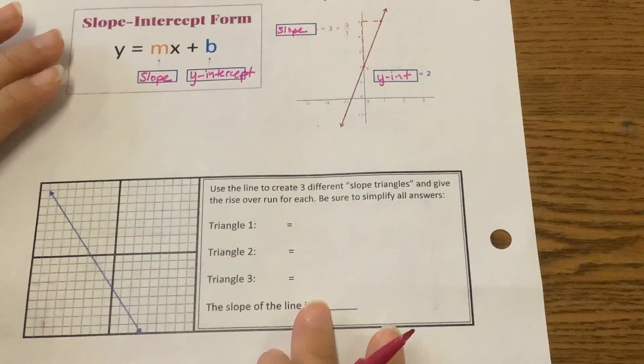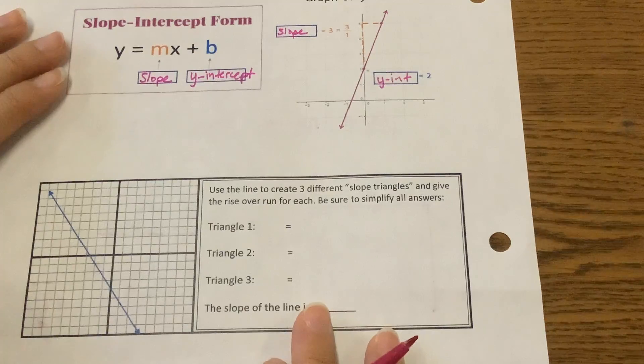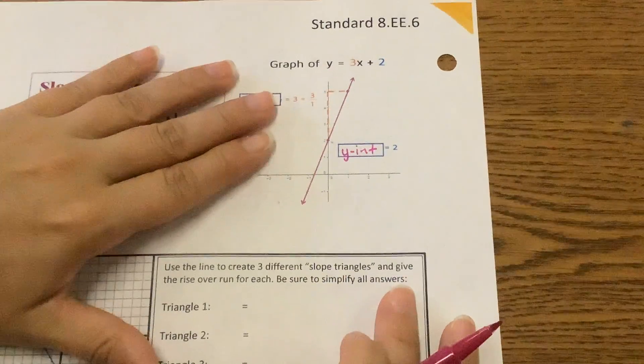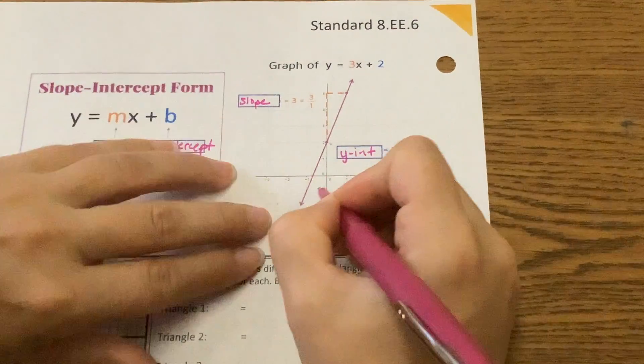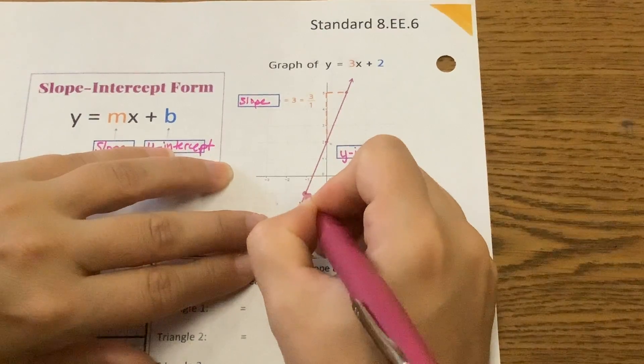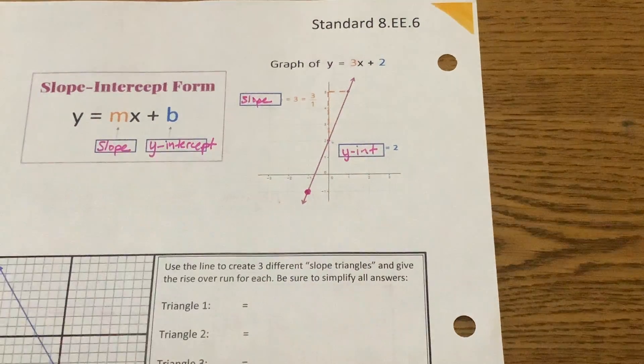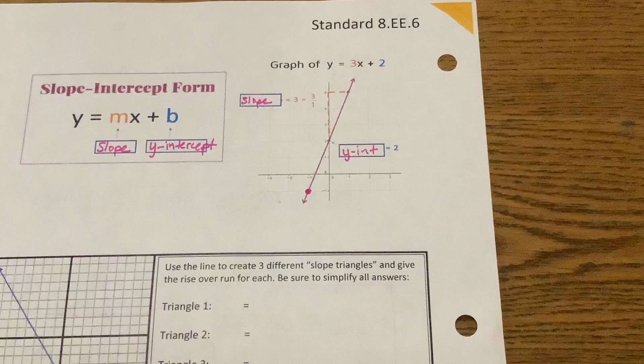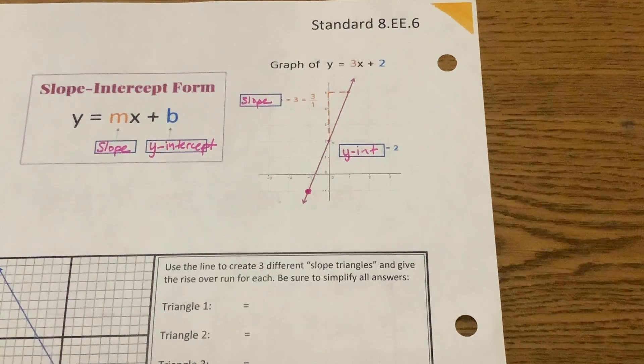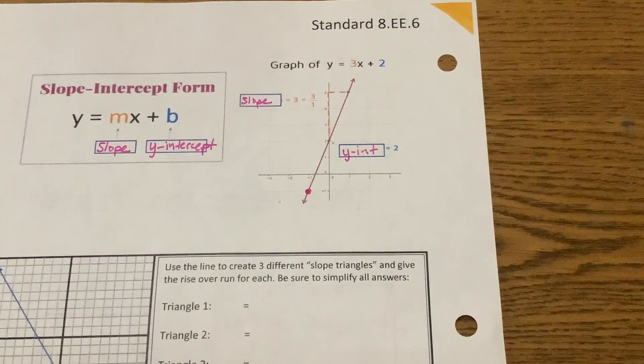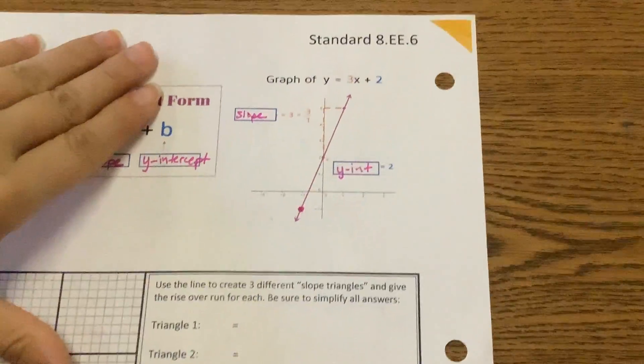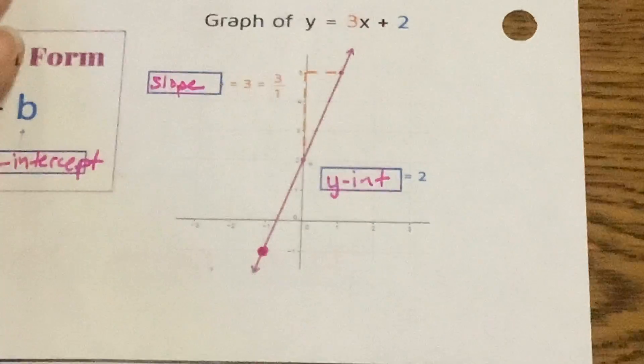So let's talk about finding another triangle on this graph. Put a point at negative one, negative one. Only one at the bottom? Yeah. Okay.